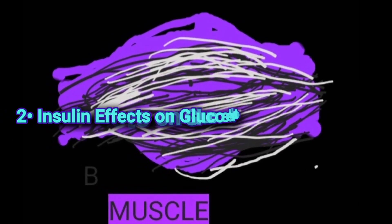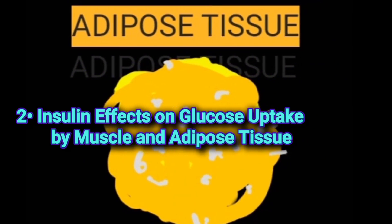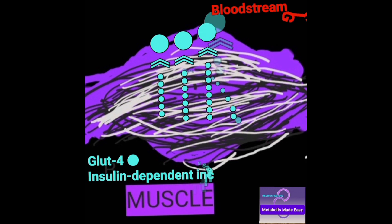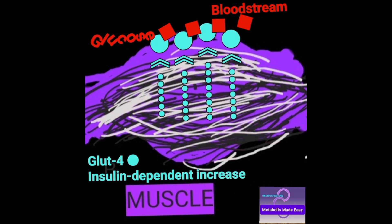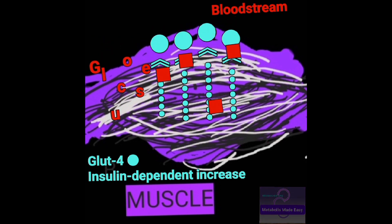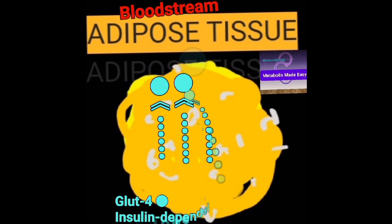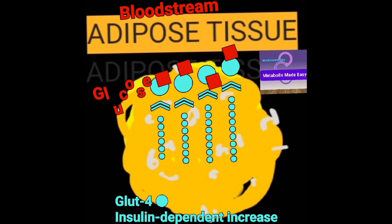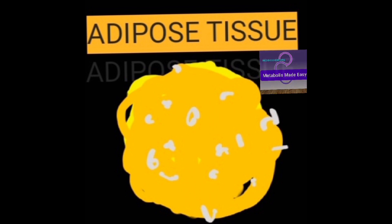Effects of insulin on glucose uptake by muscle and adipose tissue: by specifically increasing the number of glucose transporters GLUT4 on the surface of these two tissues, muscle and adipose tissue will pick up glucose from the bloodstream in an insulin-dependent manner. These two tissues constitute a significant portion of body mass and can contribute to a significant amount of glucose uptake from the bloodstream, reducing blood glucose levels. This effect of insulin is specific for muscle and adipose tissue only.